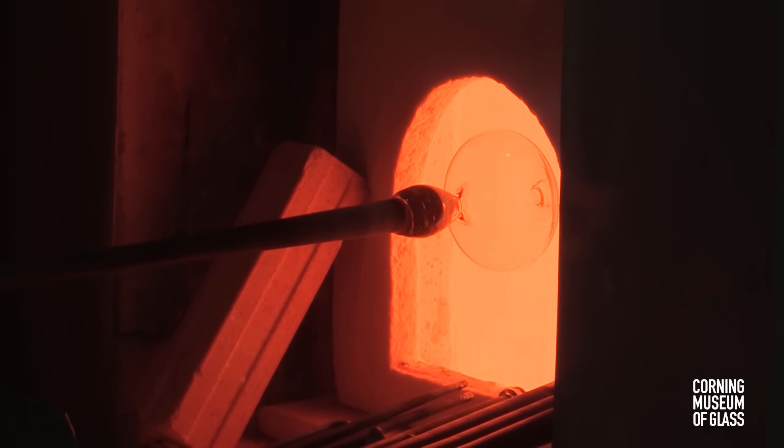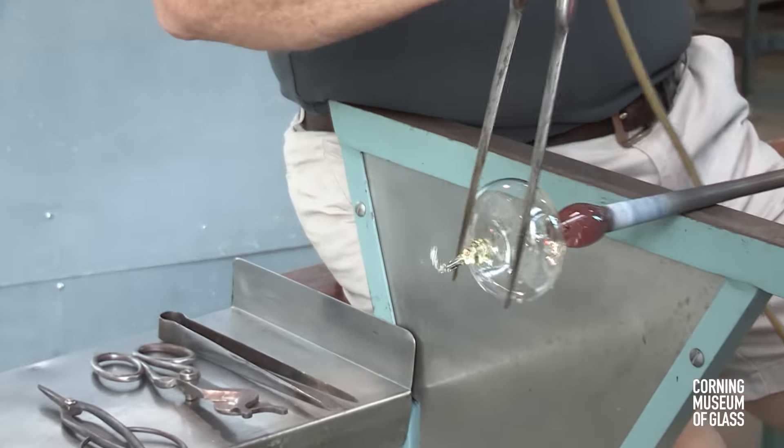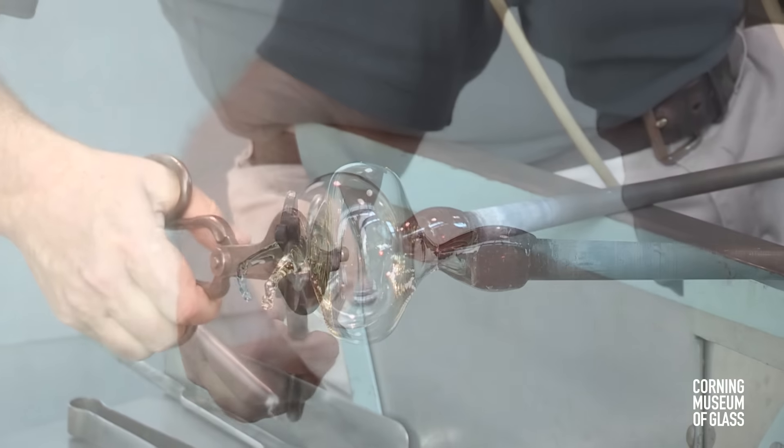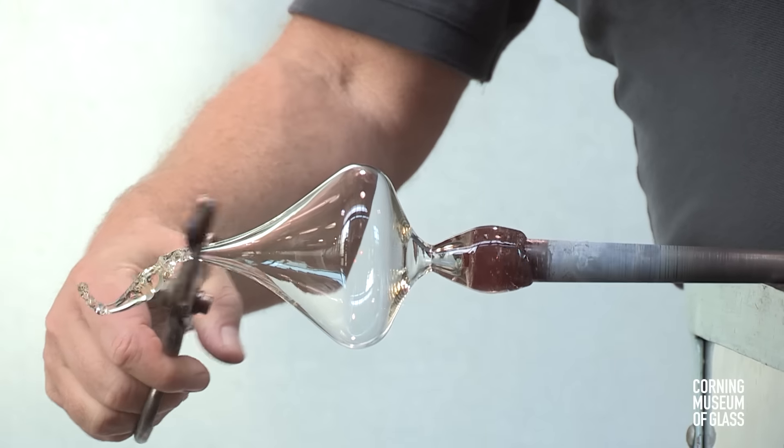The lower part of the oblate spheroid is reheated. The tip is pulled to form the lower shape of the vessel.